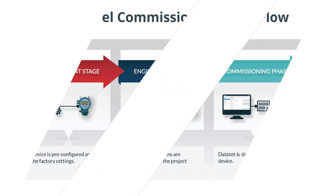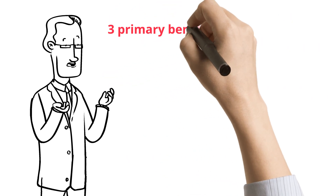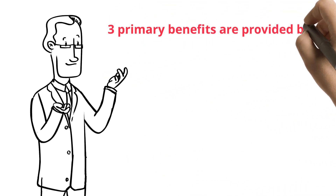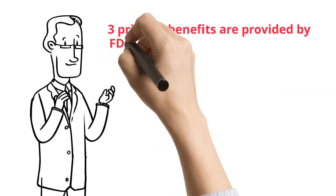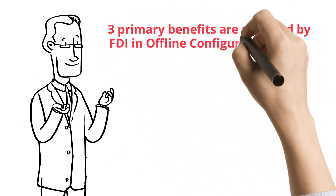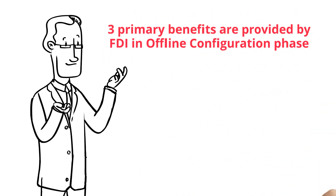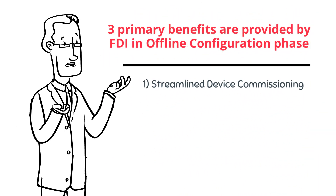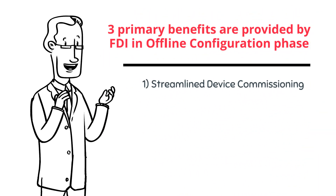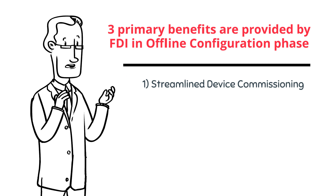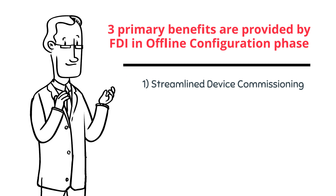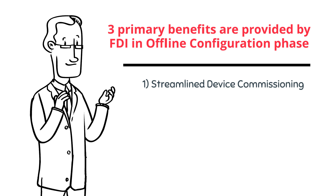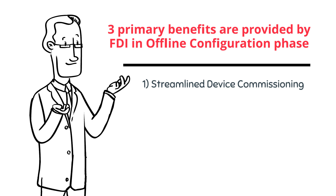The following three primary benefits are provided by FDI in the offline configuration phase. First: Streamlined device commissioning. FDI technology supports offline commissioning and silent bulk download to reduce device commissioning time and engineering costs.